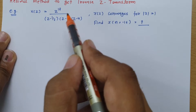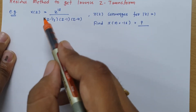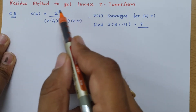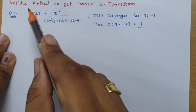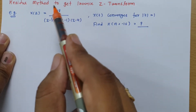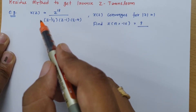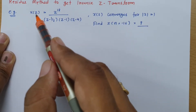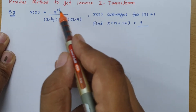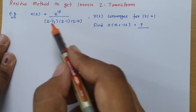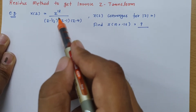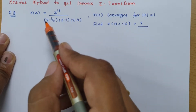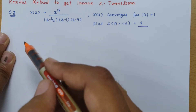One thing we need to keep in mind is that whenever the Z transform has a very high order polynomial, in that case we should go for the residue method. Otherwise you can go for long division or partial fraction method if X of Z is there with a lower order of Z. But if X of Z has a very high order of Z, we should go for the residue method.